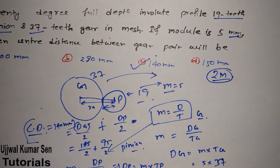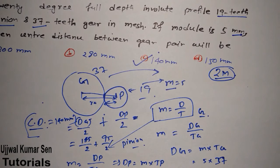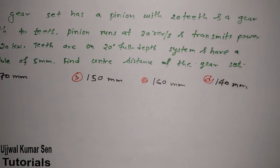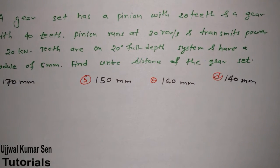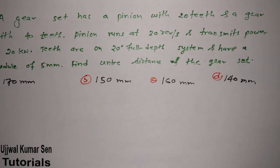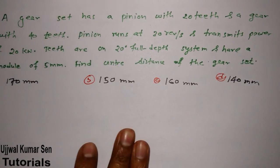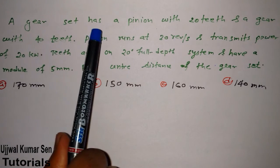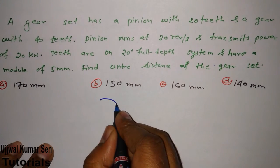Let me share another question also asked in GATE previous year. This was a linked question, but it can be solved using the same formula: M = D / T, where D is the diameter and T is the number of teeth of the gear or pinion. We need to find the center distance.